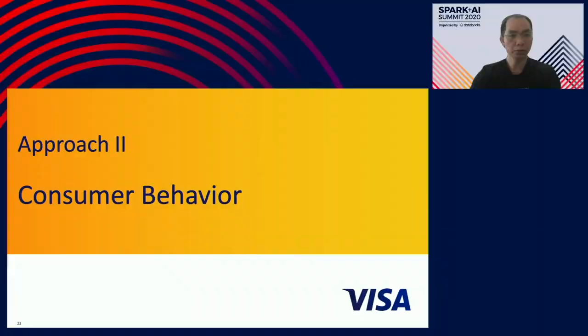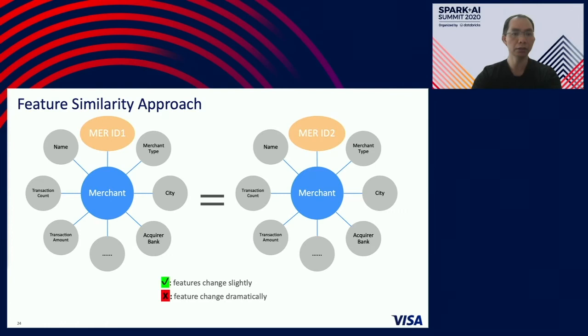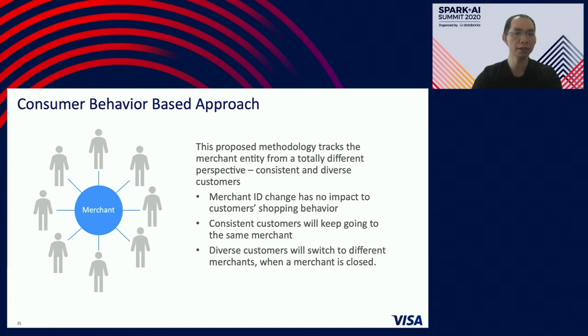Thanks. This is Jan Hua, and I am also a data scientist in research. I'll take over this presentation to talk about the second approach, which is based on consumer behavior. To refresh: the feature similarity approach checks whether two merchants are the same by comparing their features. If the features are very similar, we say these two merchants are in fact one merchant. This approach works well if the features change only slightly. However, if features change dramatically — for example, the parent company changes for the merchant — as a result, the name, merchant type, and acquirer bank can all change. In this case, the feature similarity approach may not work well. So we decided on a new approach based on consumer behavior.